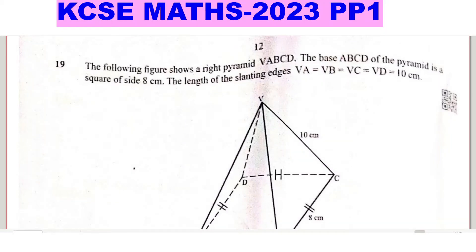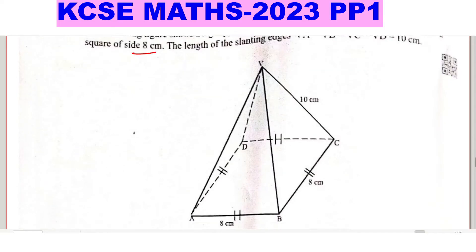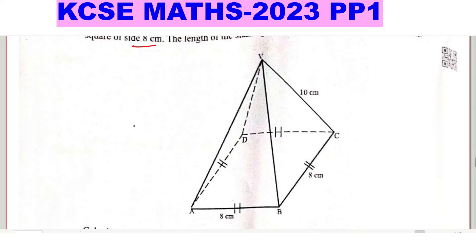Question 19. The following figure shows the right pyramid V, A, B, C, D. The base ABCD of a pyramid is a square of side 8 centimeters. The length of the slanting edges VA equals VB equals VC equals VD equals 10 centimeters. So you can see the diagram there. In a right pyramid, the slant heights are equal.